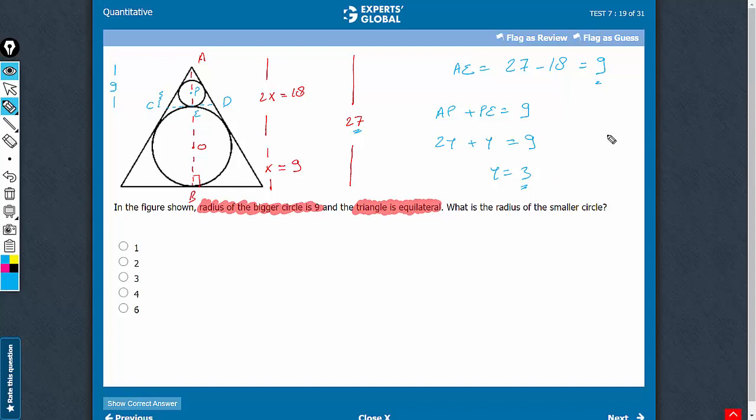In simple words, we knew that the entire perpendicular here is 9, and therefore the radius is going to be 9 times 1 by 3. This is going to be 3.